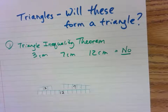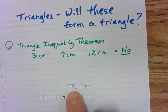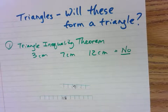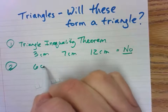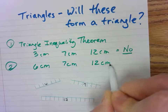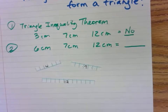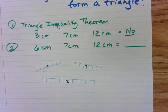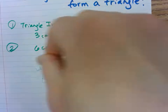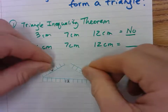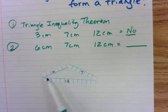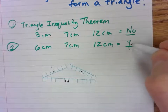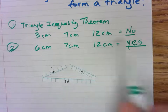Let's try another one. Instead of the three, let's use a six. So this time we're going to try six, seven, and twelve. So I've got six centimeters, seven centimeters, and twelve centimeters. If I put the seven down on the end and barely touch it, and put the six there and barely touch it — can I lean them in to where they actually form a triangle? And guess what — yes, right there in the middle it forms a triangle! So six, seven, and twelve is a YES.